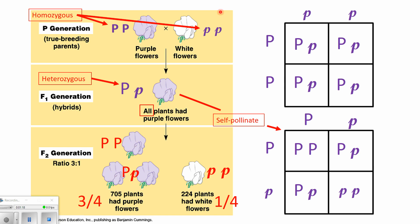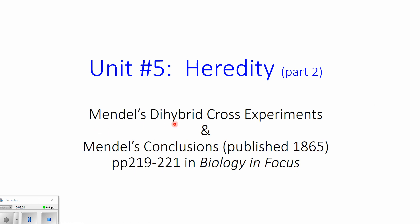But Mendel became curious about another element of heredity. He wondered: when pea plant parents pass down their genes for flower color — purple or white alleles — does that have any impact on the height of the plant? Or does the gene for flower color affect seed color or seed shape? In other words, he wondered: are all physical traits inherited independently, or are certain genes always passed down to the next generation along with other specific genes? The only way to figure that out was through a slightly more complex genetic cross called the dihybrid cross, and that's what we're going to discuss today in part two.